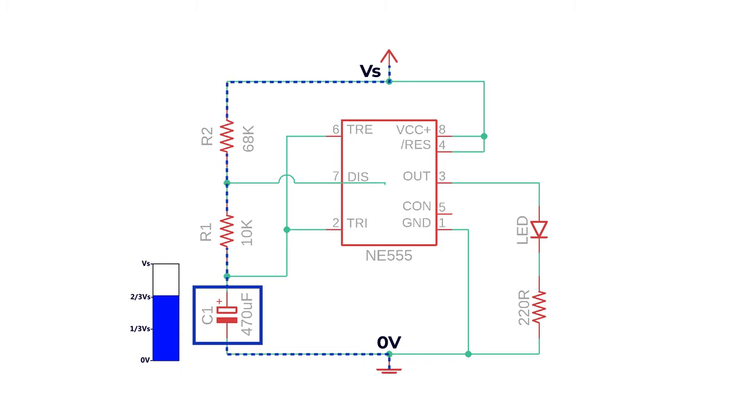Simultaneously pin 7 will reconnect internally to 0 volts which results in capacitor discharging via resistor R1. And once the voltage across the capacitor falls below one third of the supply voltage, pin 2 will turn on the output and this whole cycle repeats again and again.